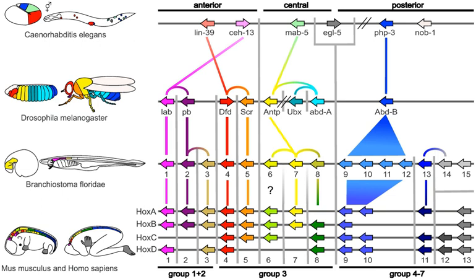Together, they generate the patterns in time and space which shape the embryo, and ultimately form the body plan of the organism. Among the most important toolkit genes are the Hox genes. These transcription factors contain the homeobox protein-binding DNA motif, also found in other toolkit genes, and create the basic pattern of the body along its front-to-back axis. Hox genes determine where repeating parts, such as the many vertebrae of snakes, will grow in a developing embryo or larva. PAX-6, already mentioned, is a classic toolkit gene. Homeobox genes are also found in plants, implying they are common to all eukaryotes.